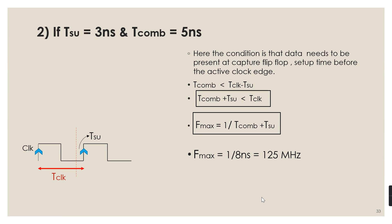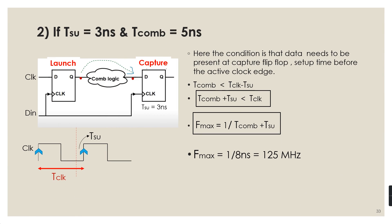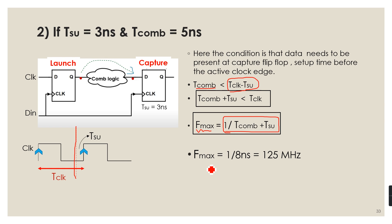Now the first practical case: non-zero setup time. Let's say setup time T_su = 3 ns. The output data of the launch flip-flop must be present at the input of the capture flip-flop before the setup time window — that is, before the active clock edge — to prevent a setup violation. So the relation becomes: T_comb < T_clock − T_su, or T_comb + T_su < T_clock, giving maximum frequency = 1 / (T_comb + T_su) = 1 / (5 + 3) ns = 125 MHz.